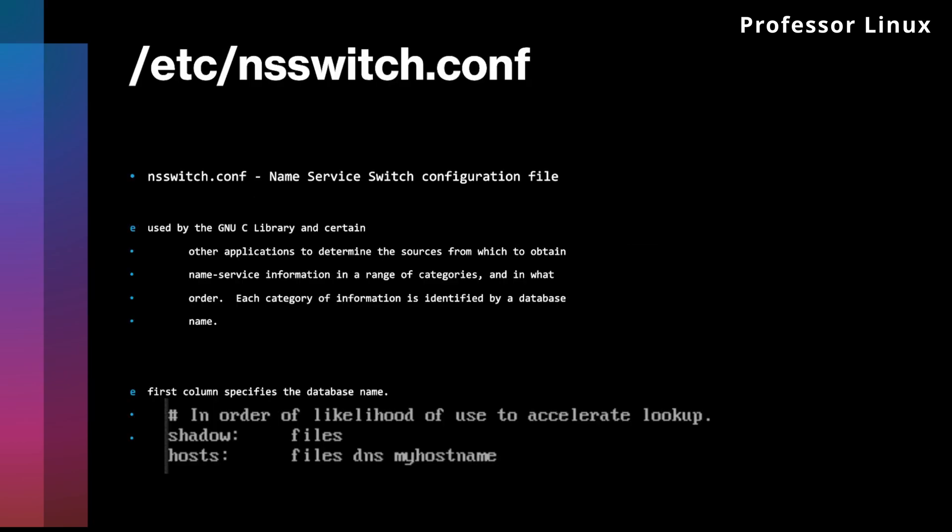The last one is NSS switch, which stands for Name Service Switch Configuration. It's used by the GNU C library and certain other applications to determine the sources from which to obtain name service information, and it's in order. Each category of information is identified by a database. When it's looking for passwords or shadow entries, it looks at the files first. If there's no backup and it doesn't find it, then it'll fail. For example, if you have a server named Candy, it checks files, then DNS, then hostname — if none have it, it fails.